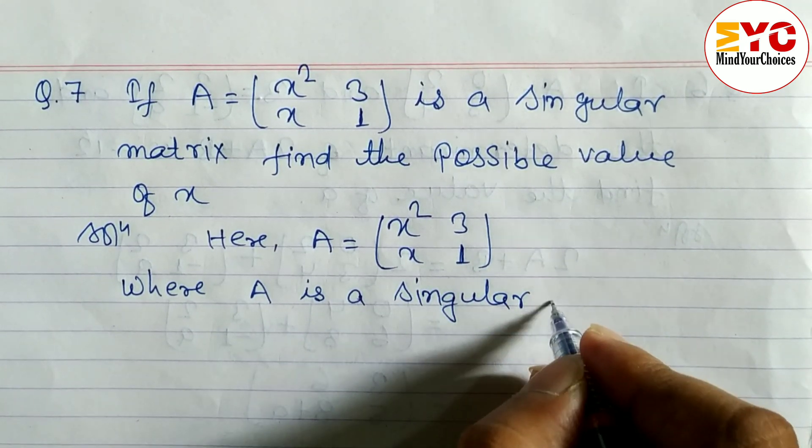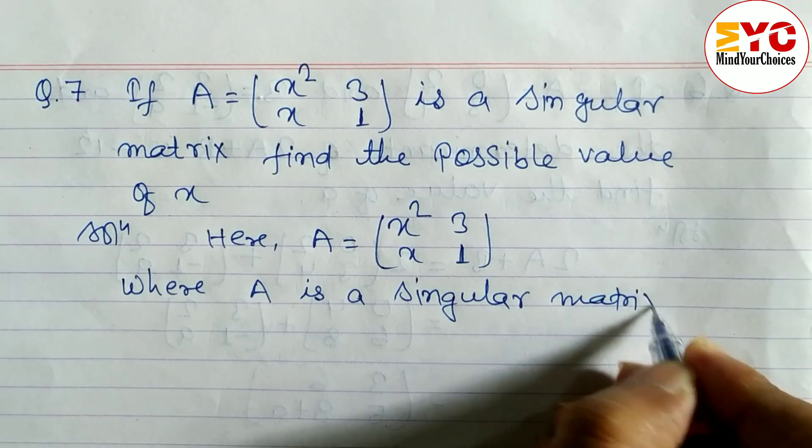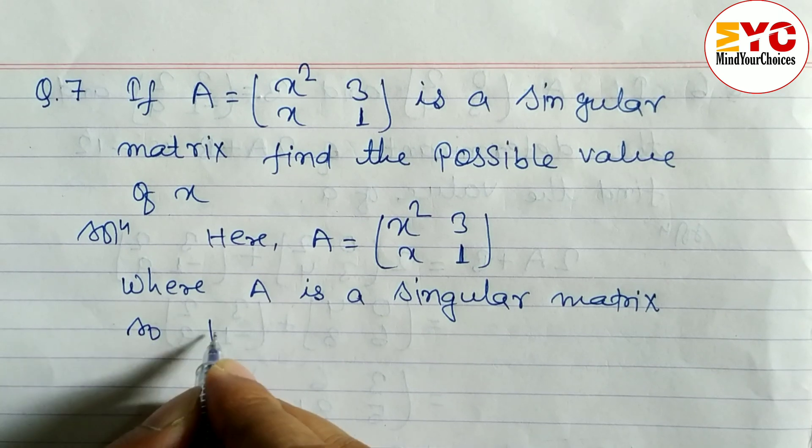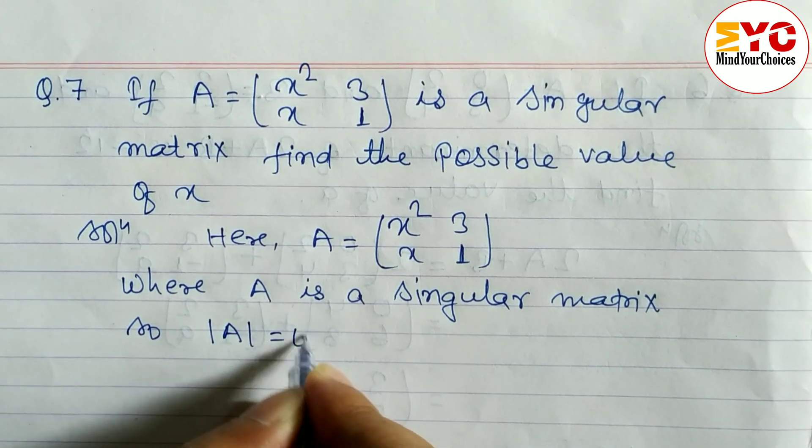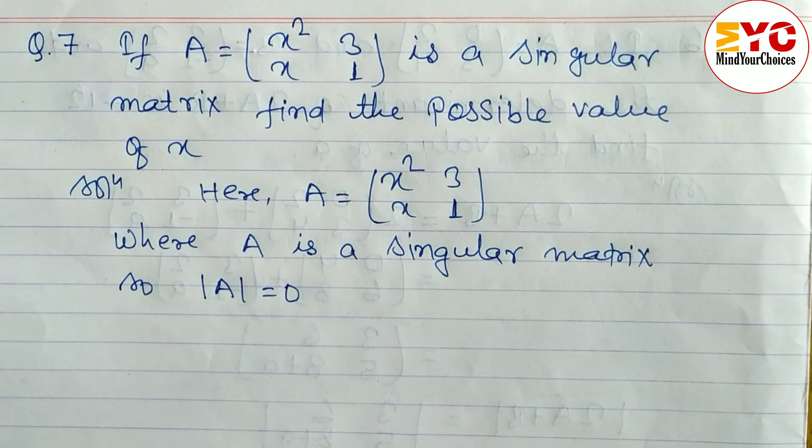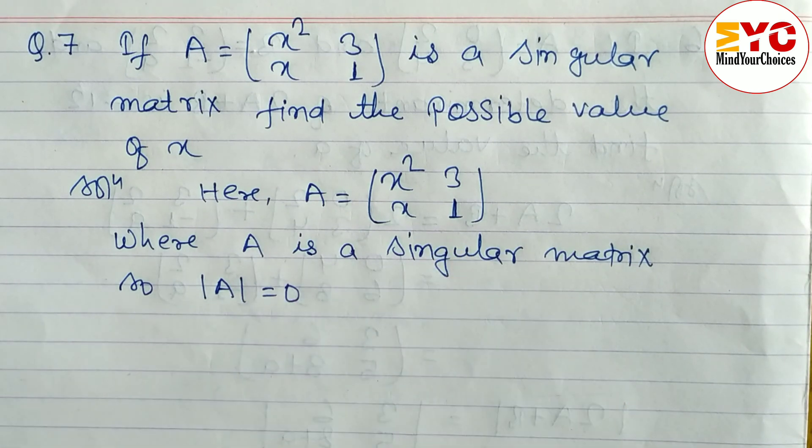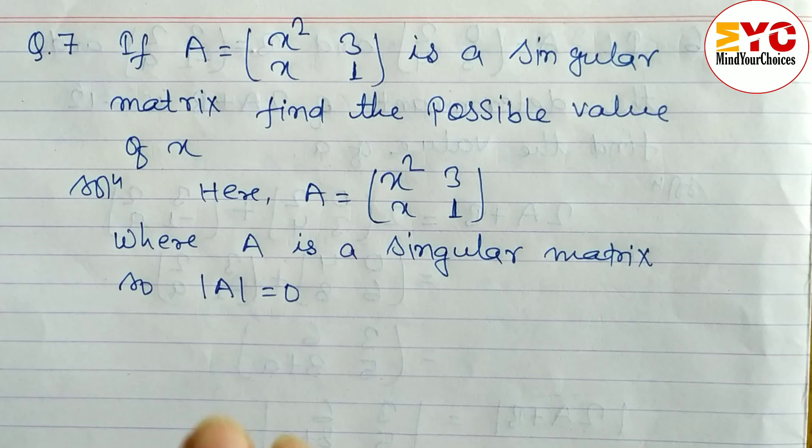If any matrix is singular, then the determinant is equal to 0. So we can write determinant A is equal to 0. If determinant A equals 0, then the matrix is singular.